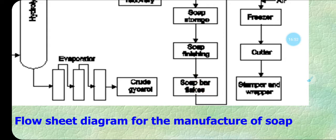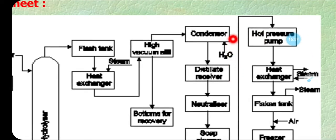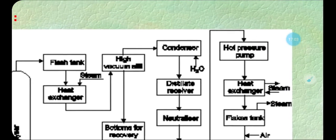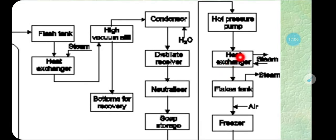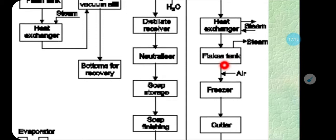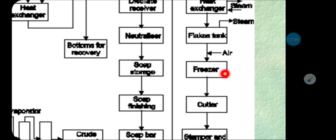This jelly-type liquid is transferred to a hot fresher pump where the liquid soap is pumped through. After that, it goes through a heat exchanger for cooling, then into a flake tank where air cooling takes place. The highly viscous liquid soap is continuously cooled by air flow.